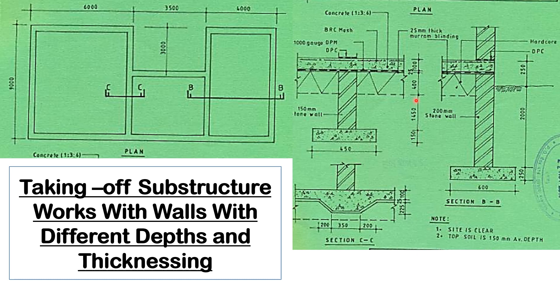Then the depth up to the bottom of the hardcore, the reduced level is 1450. The thickness of the hardcore, the depth is 400 millimeters, the depth of the madam blinding is 25 millimeters, and the thickness of the concrete is 100 millimeters. We're also told that there is a 1000 gauge DPM.